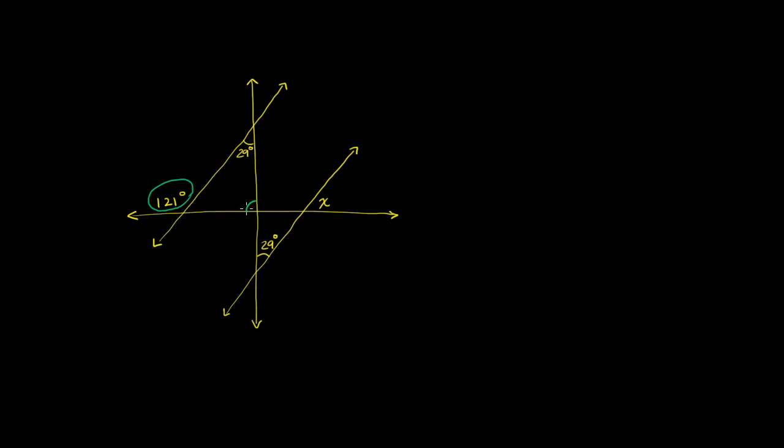Although I like to do it the other way, just so we make sure we don't do anything weird. So anyway, this is going to be 121 minus 29, which is going to be 92. And if this is 92, then this is also going to be 92.